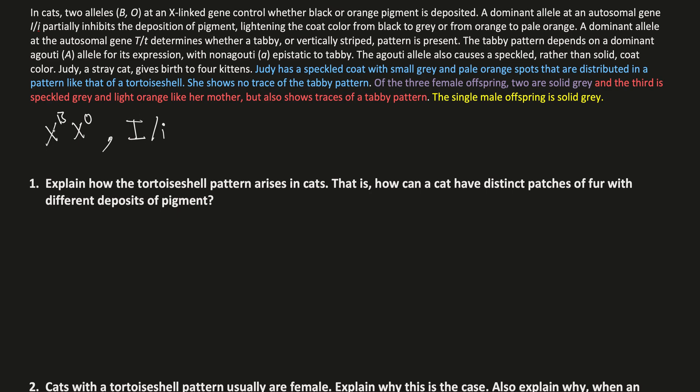If you have the big I allele, it'll make whatever black color you had gray, and whatever orange color you had pale orange. If you're homozygous recessive, then it remains black and orange.